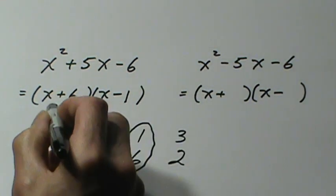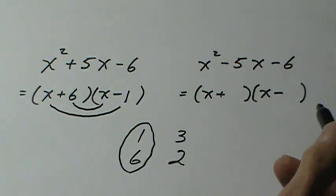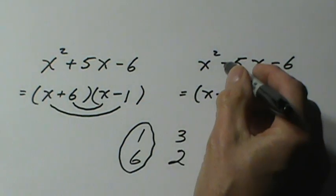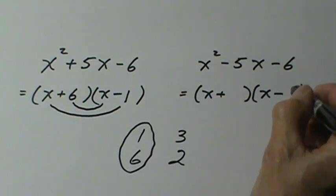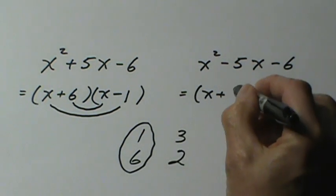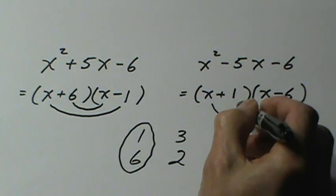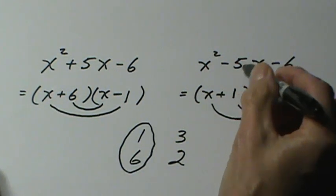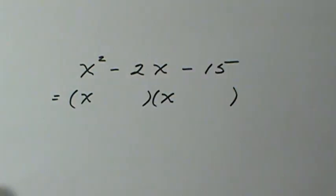Plus 6x and minus 1x gives us the 5x. And over here with the minus sign in the middle, we give the larger number the minus sign.